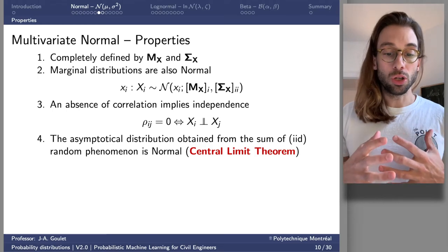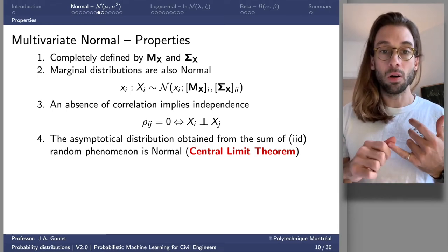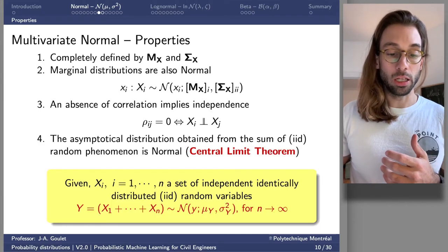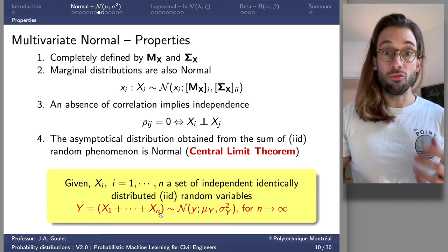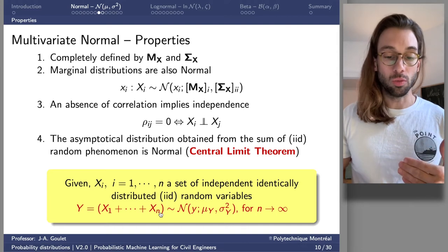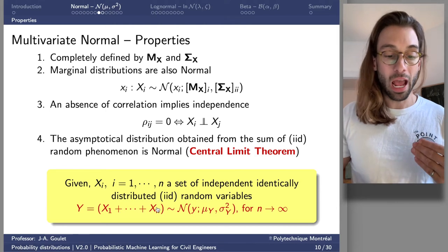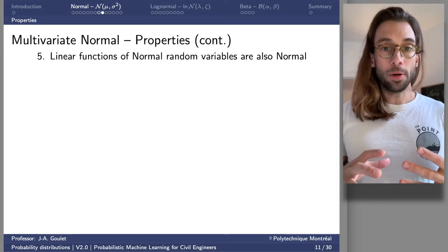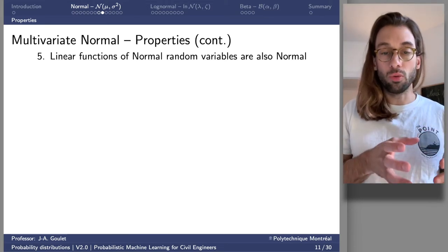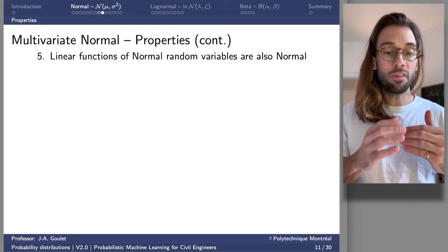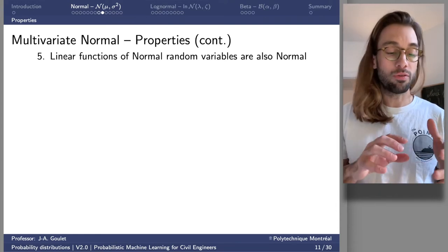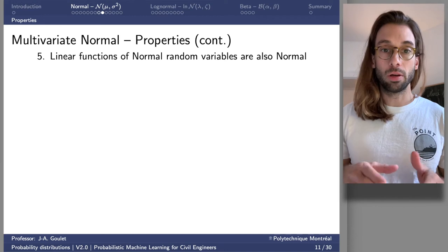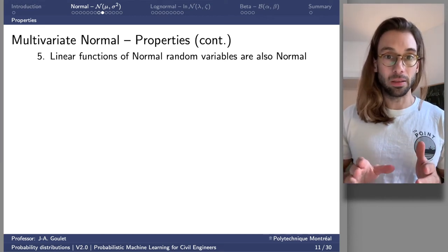The central limit theorem states that the asymptotic distribution of the sum of IID (independent identically distributed) random variables is normal. So a sum of n statistically independent and identically distributed random variables, as n tends to infinity, is distributed normally with a given mean and variance. Also, linear functions of normal random variables are also normal — this is true whether we call them 'normal' or 'Gaussian,' which are synonyms.